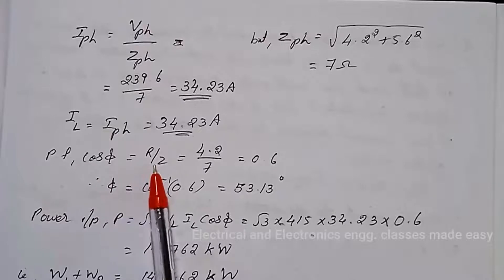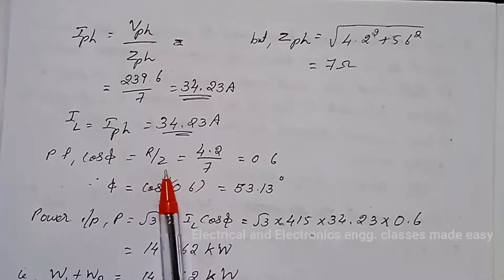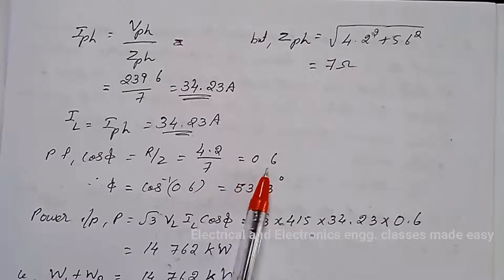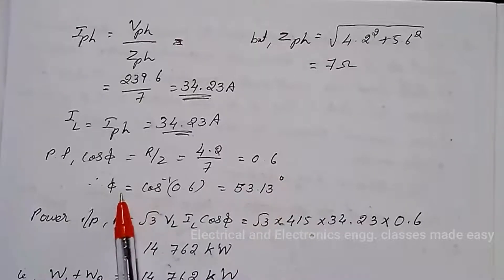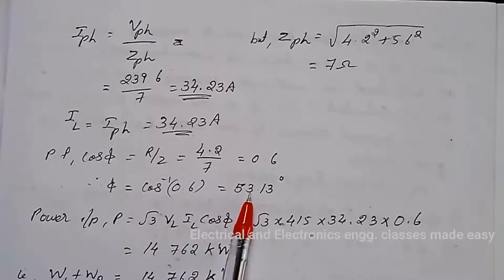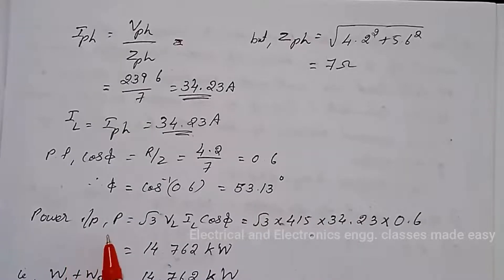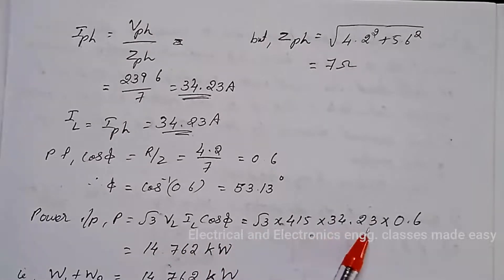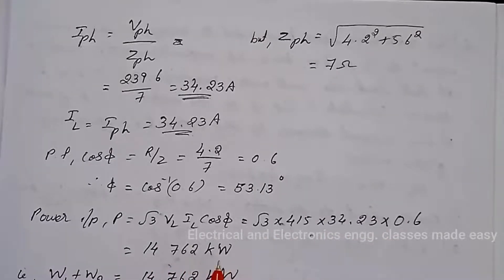The power factor cos φ = R / Z = 4.2 / 7 = 0.6, therefore φ = cos⁻¹(0.6) = 53.13 degrees. The power input = √3 × VL × IL × cos φ = √3 × 415 × 34.23 × 0.6 = 14.762 kilowatt.